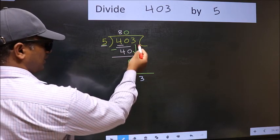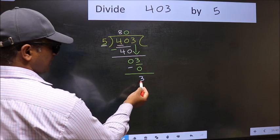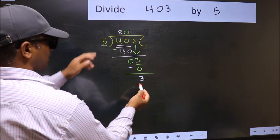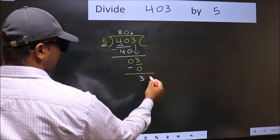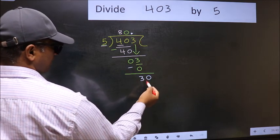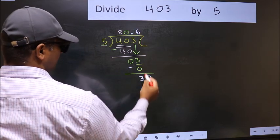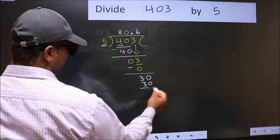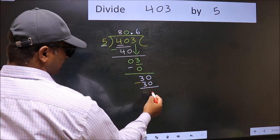Over here, we did not bring any number down, and 3 is smaller than 5. So now you can put dot and take 0. So 30. When do we get 30 in 5 table? 5, 6, 30. Now you should subtract. 30 minus 30, 0.